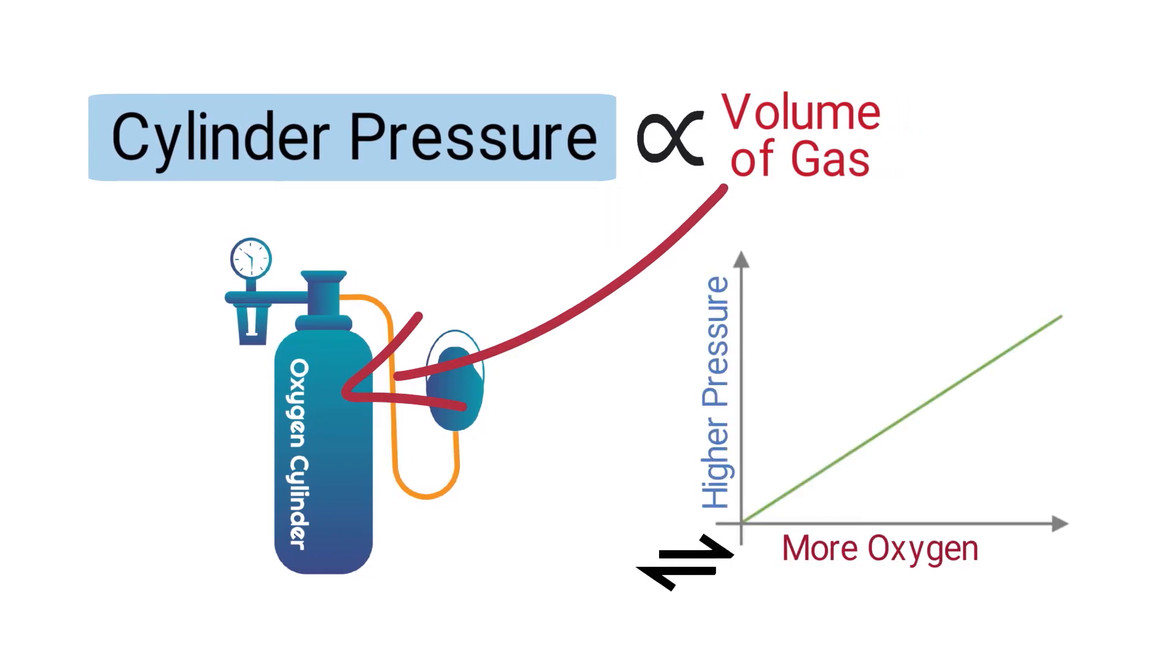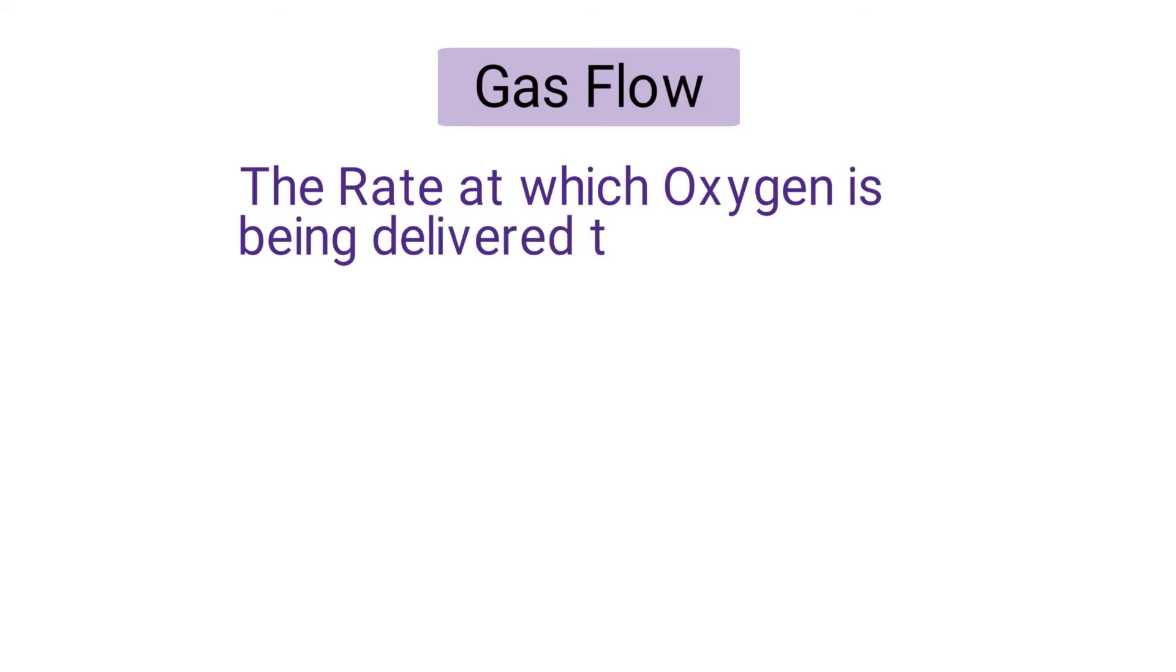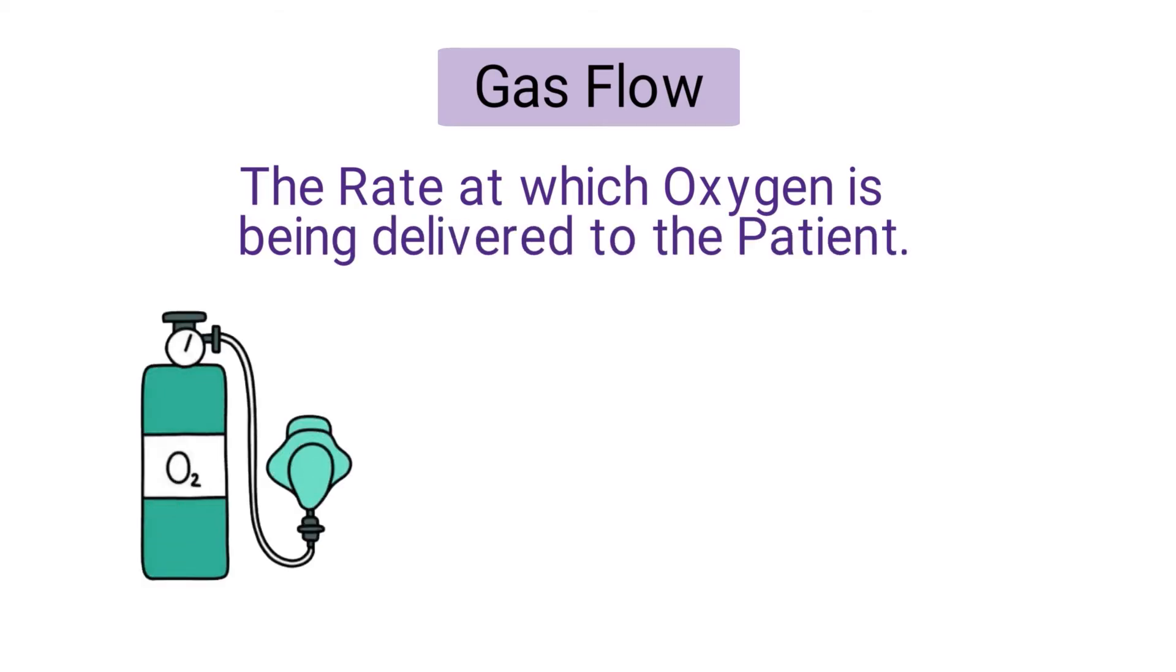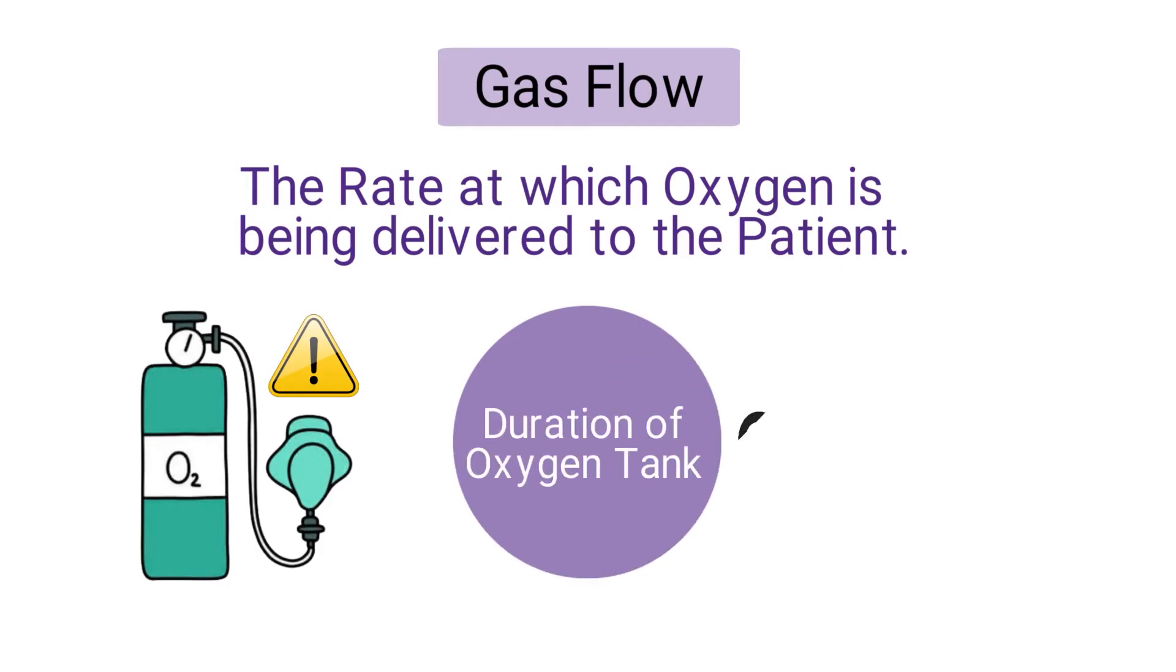The gas flow refers to the rate at which oxygen is being delivered to the patient. The higher the gas flow, the faster the tank will run out of oxygen. The duration of an oxygen tank is inversely proportional to the gas flow.